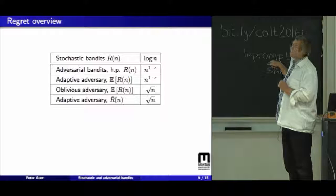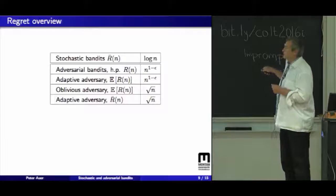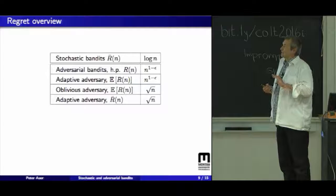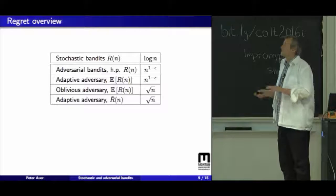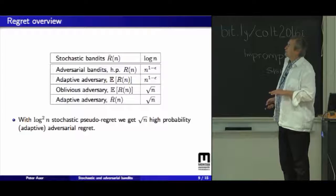This seems a little strange because we get this regret with probability n to the minus epsilon, and still we get an expected regret which is square root n. The reason is that we also have negative regret on some parts in time, and this makes this result possible. So I have maybe two minutes. So I'm not going to show you the algorithm.